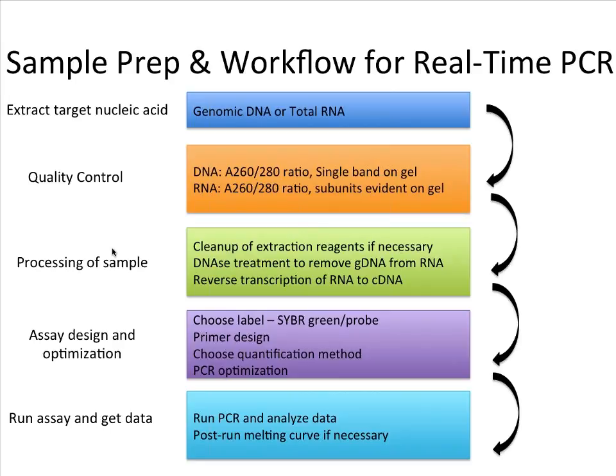For RNA you're looking for evidence of a large and a small subunit, and they should be very clear on a gel with the large subunit approximately twice as intense as the small subunit. If it all looks good here then you can proceed to the next step.